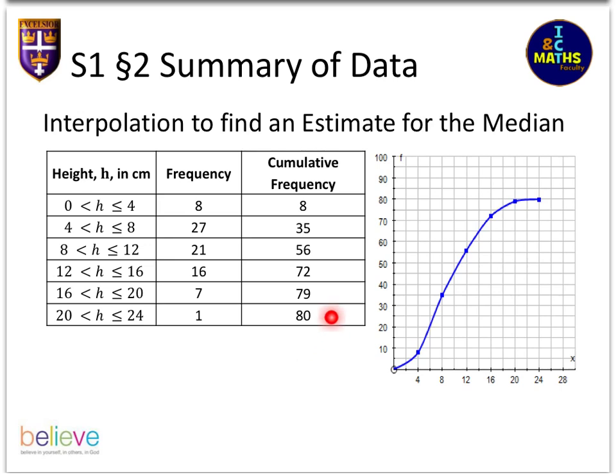You'd have looked at it and thought, I've got 80 bits of data, the median splits the data in half, so half of 80 is 40. I'll go across from 40 and down and come up with a value of just slightly bigger than 8 according to this graph.